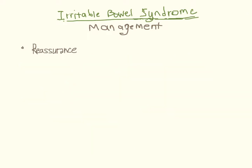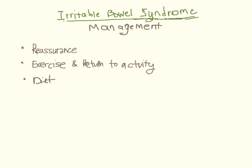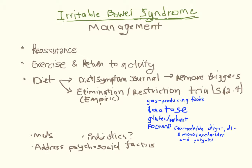Reassure patients that a disease is not being missed. Stress the importance of regular exercise and returning to normal activities as soon as possible. Although dietary interventions in IBS are common, carefully controlled studies are limited. Diet and symptom journals can be used to identify individual triggers, or empiric trials can be done between two to four weeks in length to assess for symptom response. Laxatives or fiber can be suggested for constipation, and medications of other types could be considered, although addressing psychosocial factors is really crucial as well.